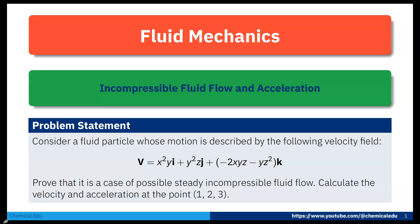Today I am going to solve one numerical problem on incompressible fluid flow and acceleration. Consider a fluid particle whose motion is described by the following velocity field: V = x²y·i + y²z·j + (−2xyz − yz²)·k. Prove that it is a case of possible steady incompressible fluid flow and calculate the velocity and acceleration at the point x=1, y=2, z=3.